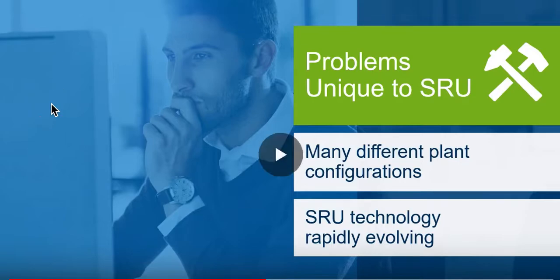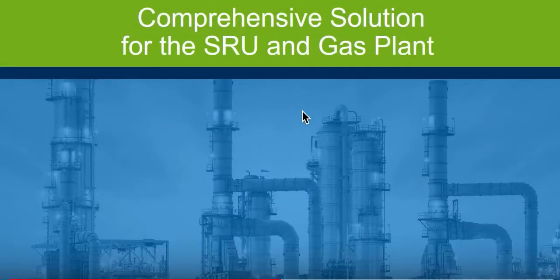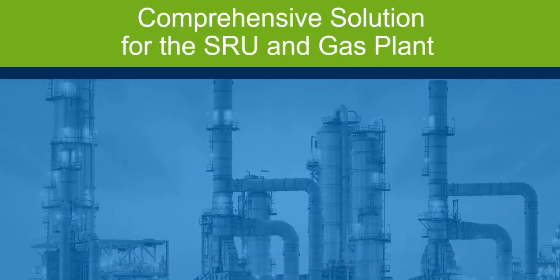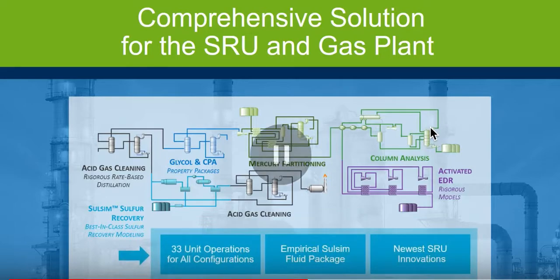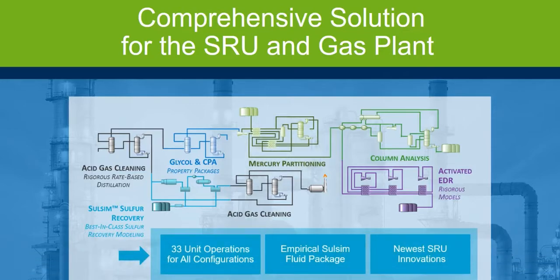Sulfur recovery technology is rapidly evolving as new catalysts and equipment modifications are introduced. With Aspen HYSYS, you have access to a comprehensive solution covering the SRU and the full gas plant, with best-in-class sulfur recovery modeling, acid gas cleaning, glycol and CPA property packages, mercury partitioning, column analysis, empirical sulfur Claus packages, 33 unit operations, specialized Claus packages, and several new innovations.